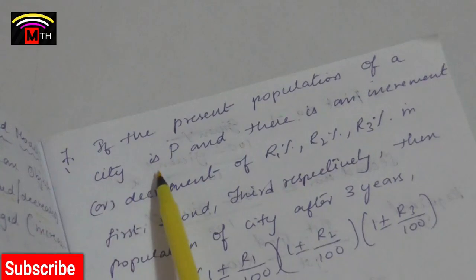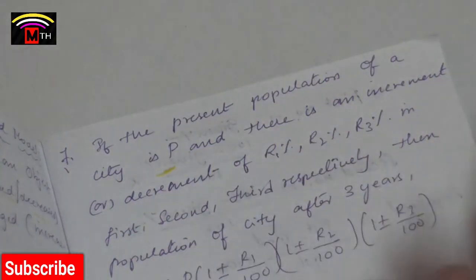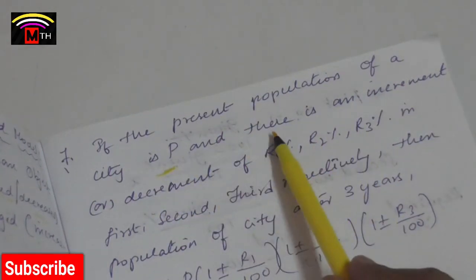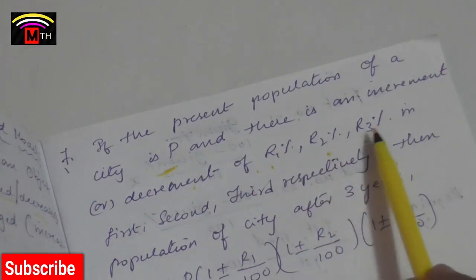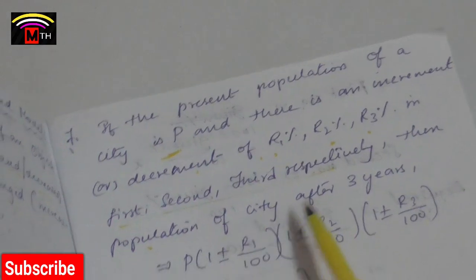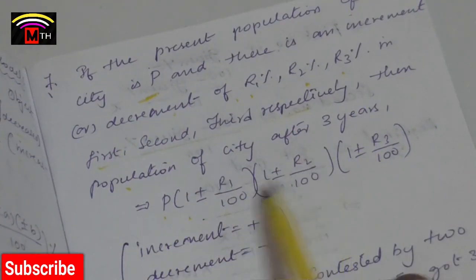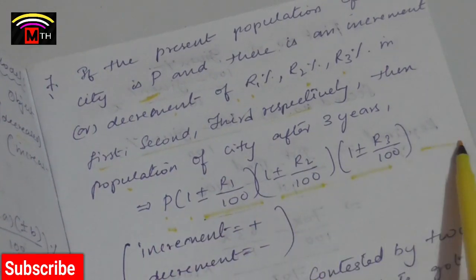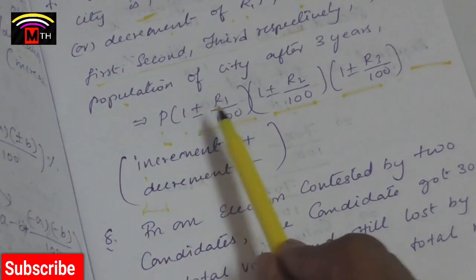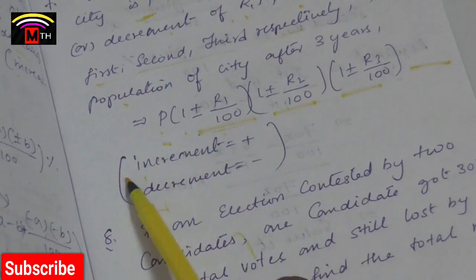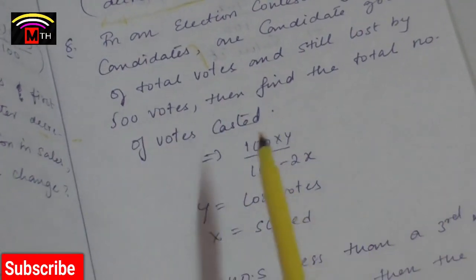Population model: if the present population of a city is P — say 10,000 or 10 lakh — and there is an increment or decrement of R1, R2, R3 percent in three years, then the population is P into 1 plus or minus R1 by 100, into 1 plus or minus R2 by 100, into 1 plus or minus R3 by 100. Use plus for increase and minus for decrease.